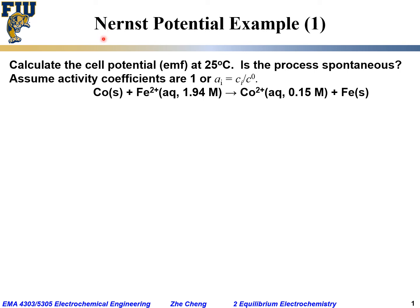Now let's look at a practical example to use the Nernst equation. We want to calculate the equilibrium cell potential at 25 degrees C (298 Kelvin) for the following reaction process. We also want to know if the process is spontaneous or not. The assumption is that activity coefficients are 1.